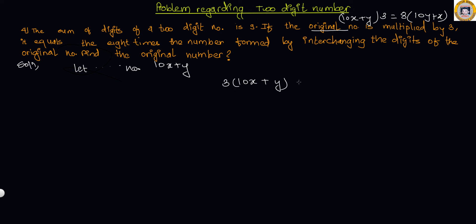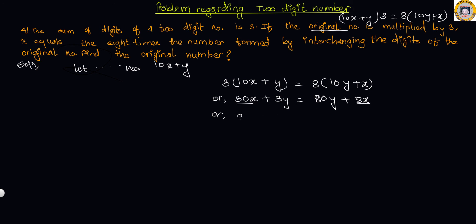The first condition gives us: 3 times the original number equals 8 times the reversed number. So 3 times (10X plus Y) equals 8 times (10Y plus X), which gives 30X plus 3Y equals 80Y plus 8X. Simplifying, 30X minus 8X equals 80Y minus 3Y, so 22X equals 77Y. This is equation 1.